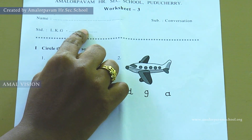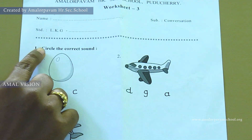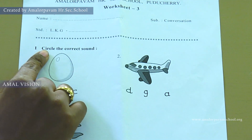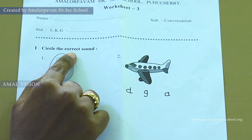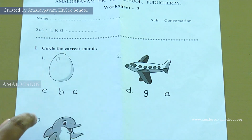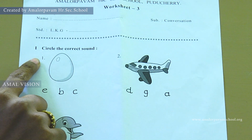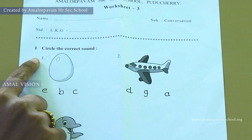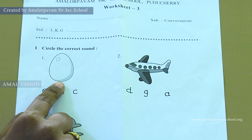This is your conversation worksheet number three. Please write your name here and the section. Keep finger on number one — circle the correct sound. Now we are going to circle the correct sound of the picture. Keep finger in one. Can you say what picture is this? This is an egg. Egg — A.